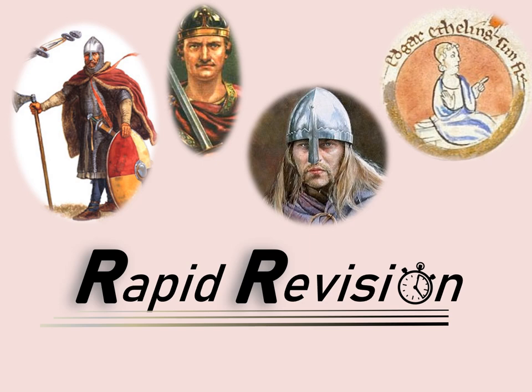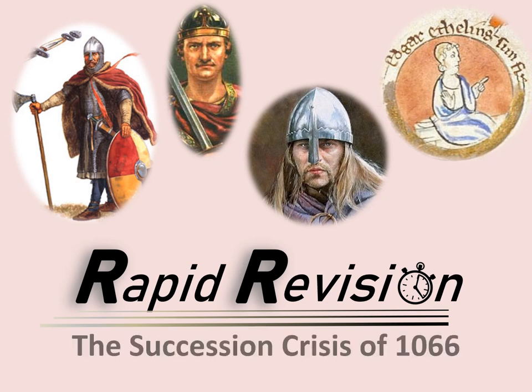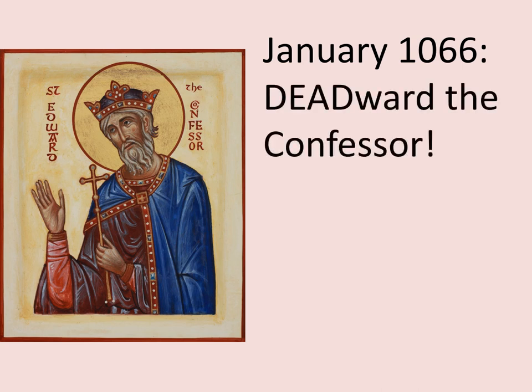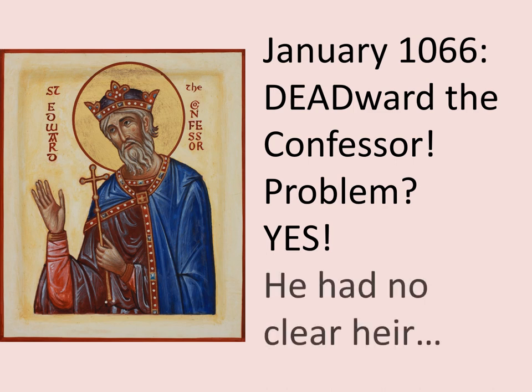Welcome to this rapid revision session on the Succession Crisis of 1066. Who should be King of England? In January 1066, Edward the Confessor died. The problem was he had no clear heir to the throne.